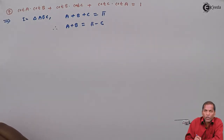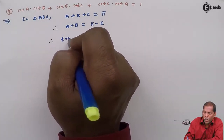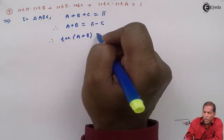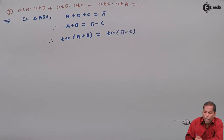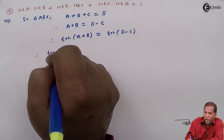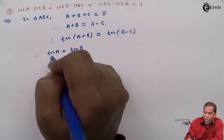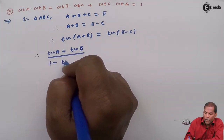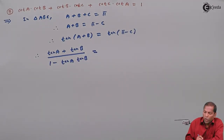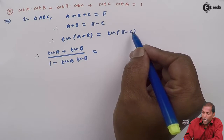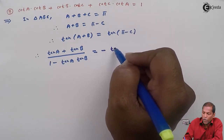Therefore, tan(A + B) is equal to tan(π − C). Here we apply the trigonometric formula for tan(A + B), which gives tan A plus tan B upon 1 minus tan A · tan B. Now, tan(π − C) equals minus tan C, since tan(180° − θ) equals minus tan θ.